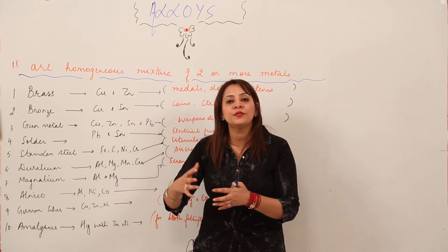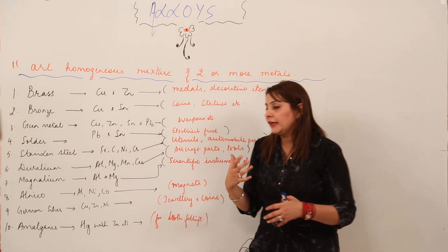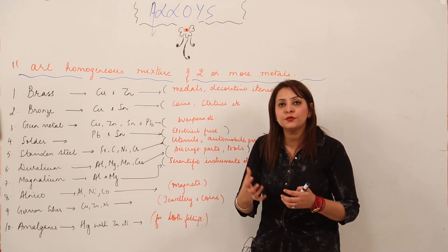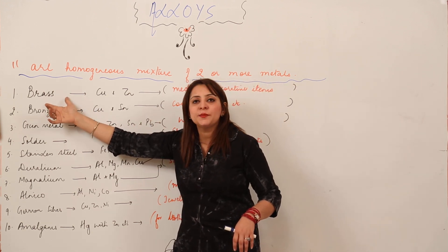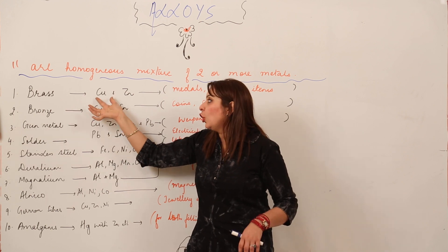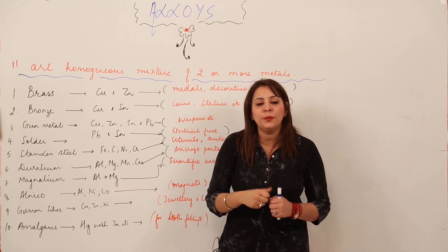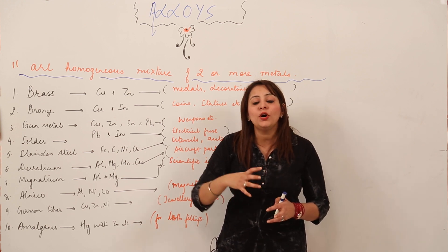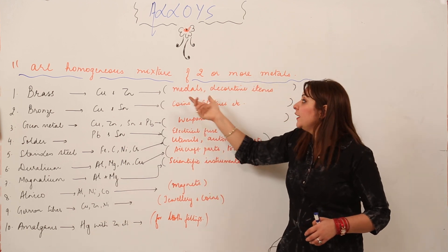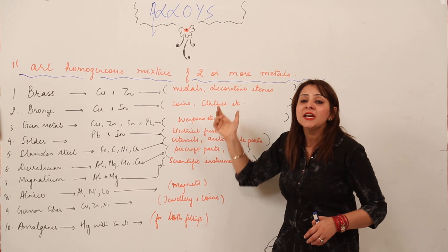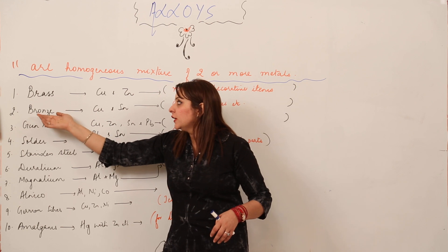The first alloy is brass. Brass is mainly an alloy of copper in which copper is mixed with zinc. After mixing, it is called brass and it is used for making medals, decorative items, and many other things.